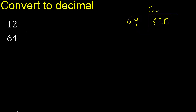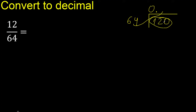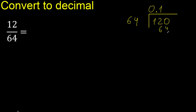Here 0 point is not less, therefore 64 multiplied by which number is nearest to 120 but not greater? Multiply by 2 is greater, therefore multiply by 1. Subtract.